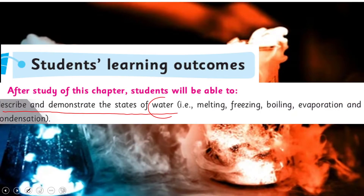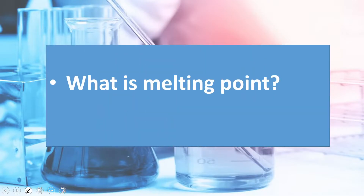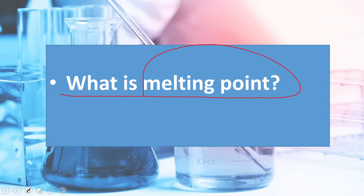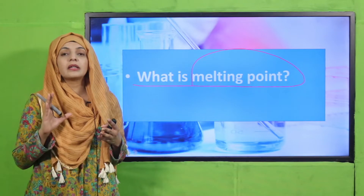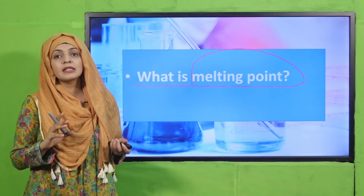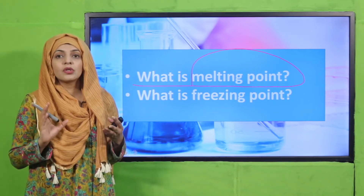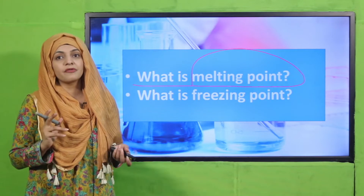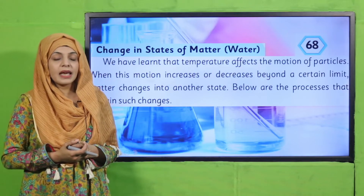The student learning outcome is to describe and demonstrate the states of water: melting, freezing, boiling, evaporation, and condensation. Today we are going to discuss melting and freezing points. For the pre-reading question: what is melting point? When you increase the temperature of a solid and it turns from solid into liquid, that temperature is its melting point. What is freezing point? The temperature at which a liquid turns into solid, or freezes — that is the freezing point.